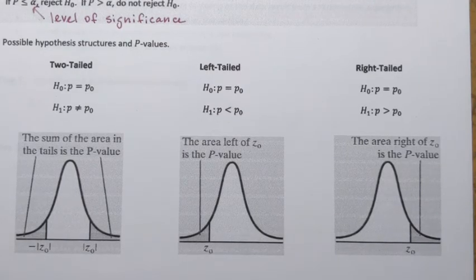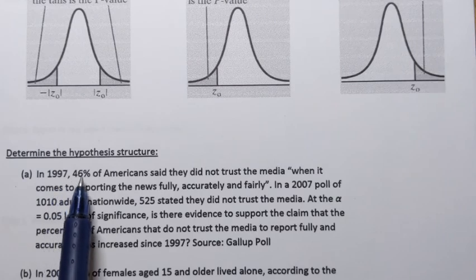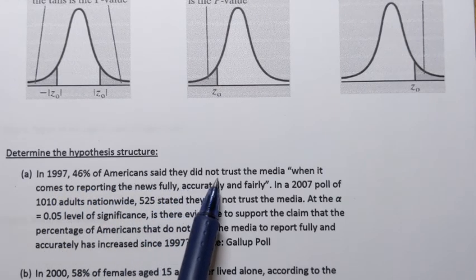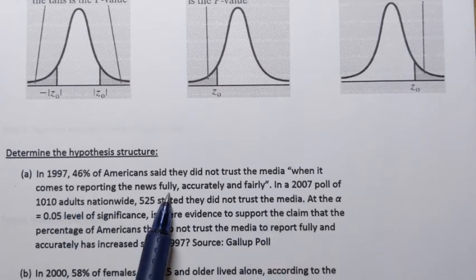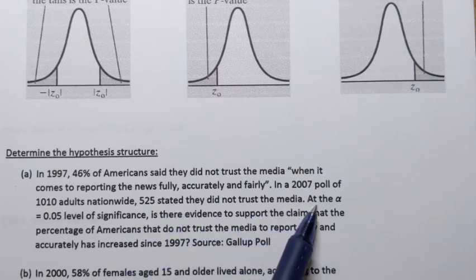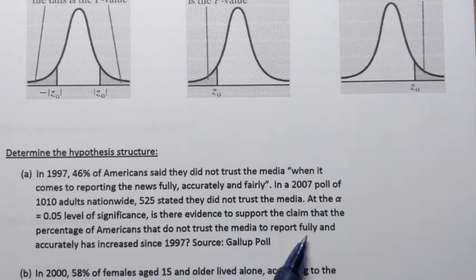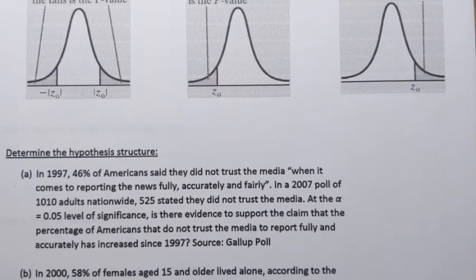We're going to start by practicing determining the hypothesis structure with a few examples. Example one: In 1997, 46% of Americans said that they did not trust the media when it comes to reporting the news fully, accurately, and fairly. In a 2007 poll of 1010 adults nationwide, 525 stated that they did not trust the media. At the alpha equals 0.05 level of significance, is there evidence to support the claim that the percentage of Americans who do not trust the media to report fully and accurately has increased since 1997? There's a lot of information here, so we need to identify what we need from this paragraph.